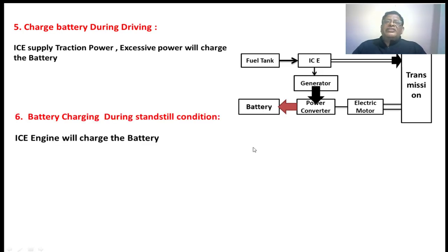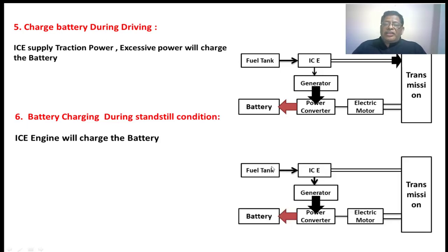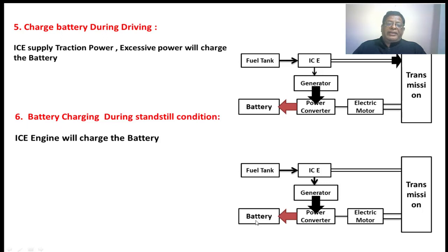Battery charging during standstill condition. Suppose if the vehicle is stopped at some area and the battery does not have that much charge, by that time the IC engine will be giving mechanical power to the generator. The generator will be converting the mechanical power to electrical power, given to the power converter. This power converter is a bi-directional converter — it has a rectifier so the AC power will be converted into DC power, charging the battery.